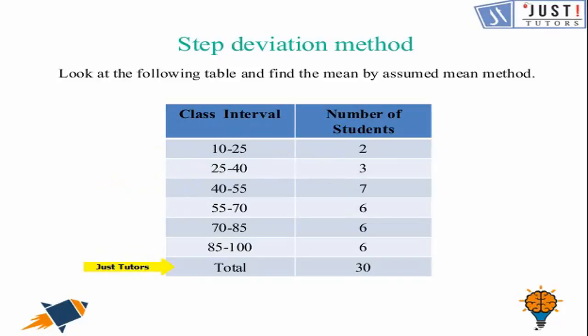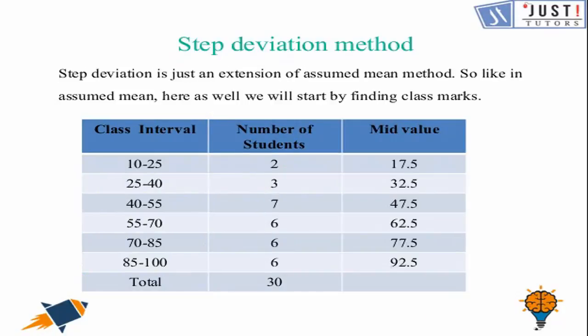So the first step is that in the direct and assumed mean method, first of all we need to find the mid values which are the xi's for the further question. So xi's are the class marks that can be found out by adding upper limit to the lower limit and dividing it by 2.